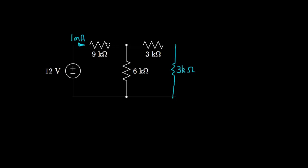We can use the current division relationship. We have 1 milliamp entering a parallel combination of 6 kilohms in parallel with 6. The current flowing through this segment is the opposite resistance, 6 kilohms, divided by the total resistance, which is 12. So that's one half times the original current of 1 milliamp, giving us a half of a milliamp flowing in each direction.